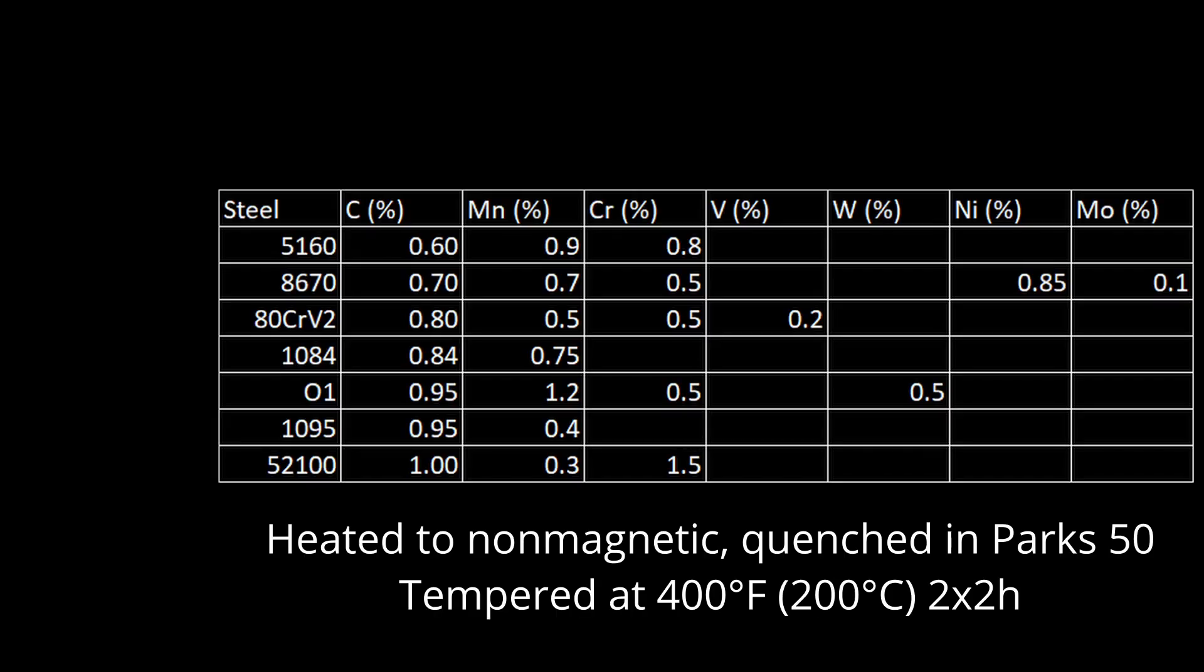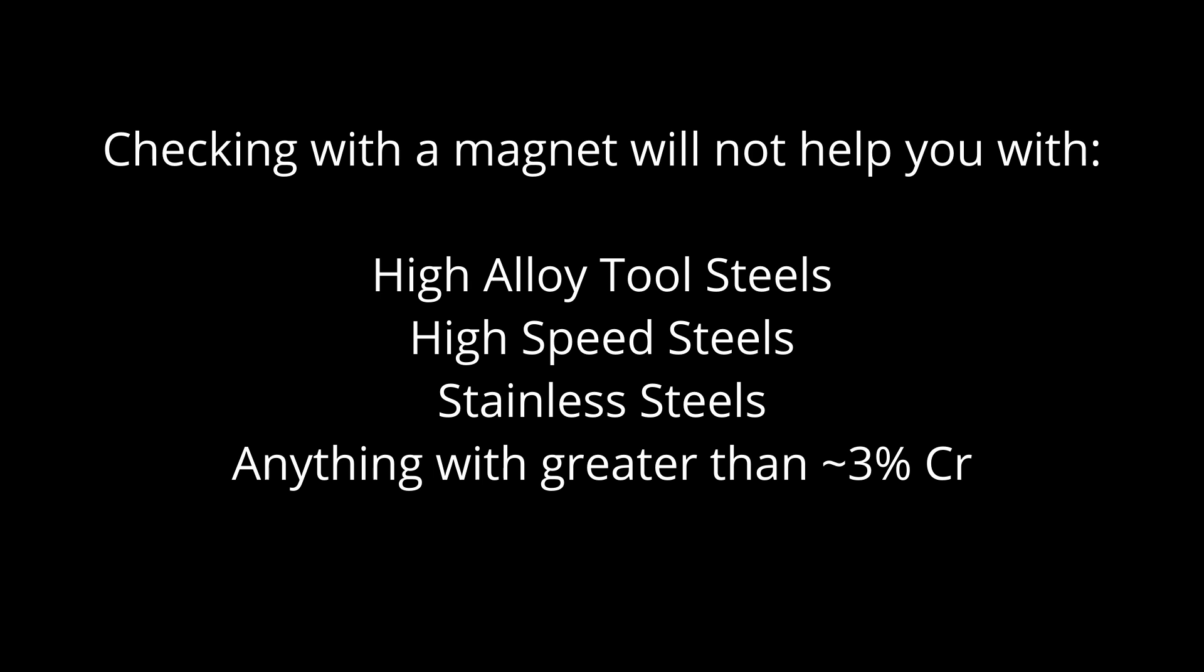I chose a range of low alloy steels for this experiment with different carbon and alloy contents. On the low end, carbon-wise is 5160 and 8670. High carbon I have 1095, O1, and 52100, and with 1084 and 80CrV2 in between. O1 and 52100 have the most alloy, especially 52100. Chromium in particular increases the time and temperature required for austenitizing, so this is potentially the most challenging steel to heat treat with a forge. I have not attempted to heat treat any high alloy tool steels or stainless steels as they are in their own category when it comes to heat treating. This is essentially any steel with more than about 3% chromium. These methods of heat treating normalized pearlitic steel and checking for transformation with a magnet is not intended for high alloy steels.